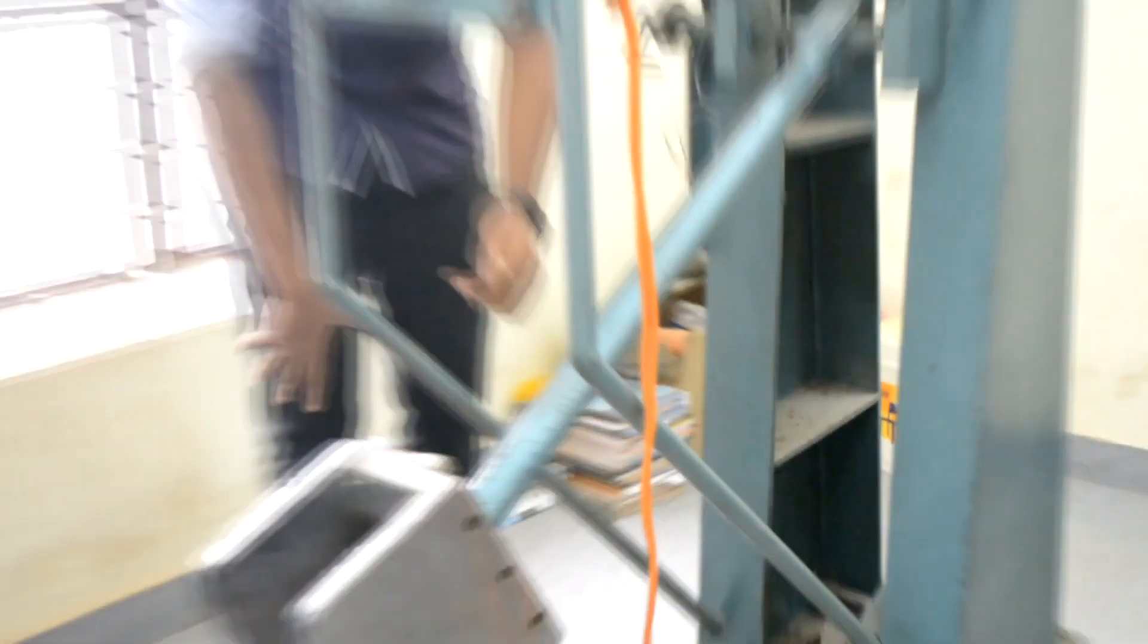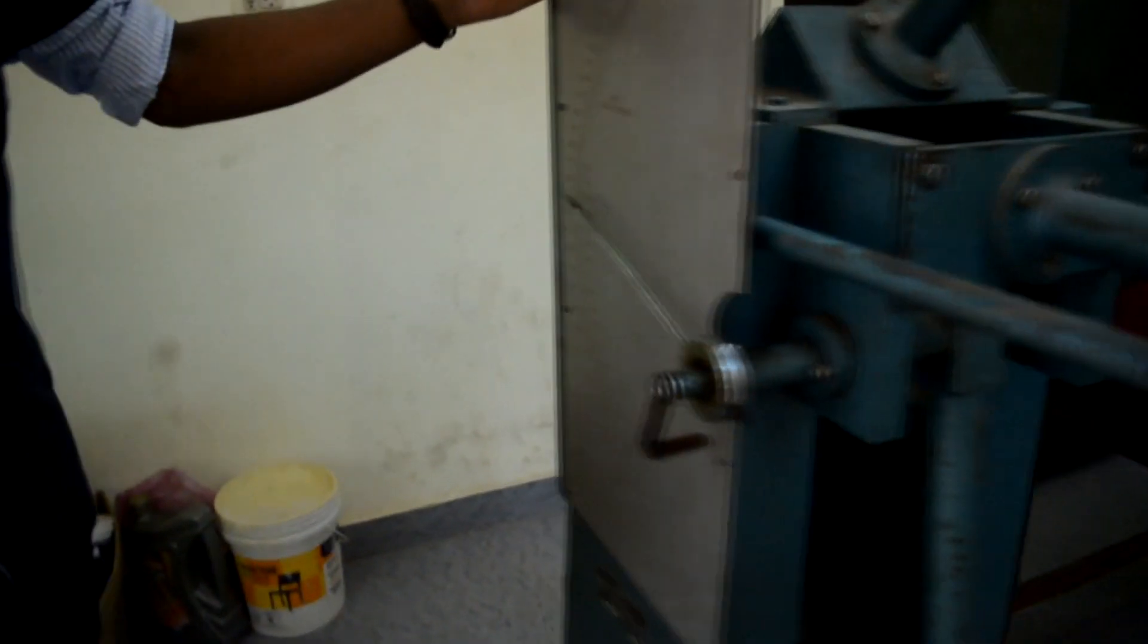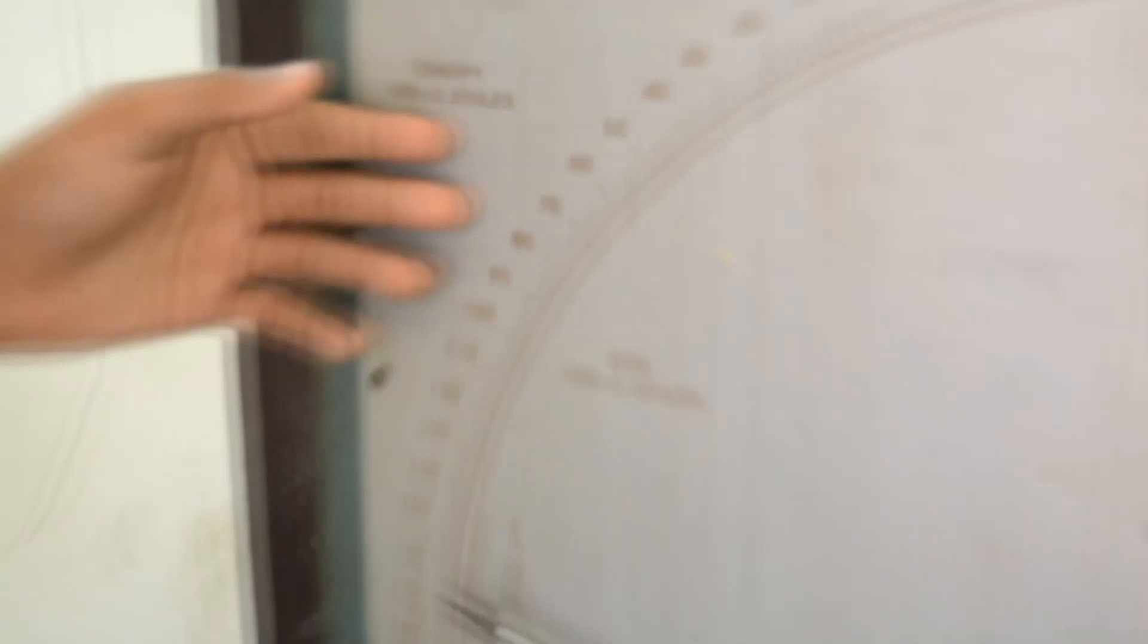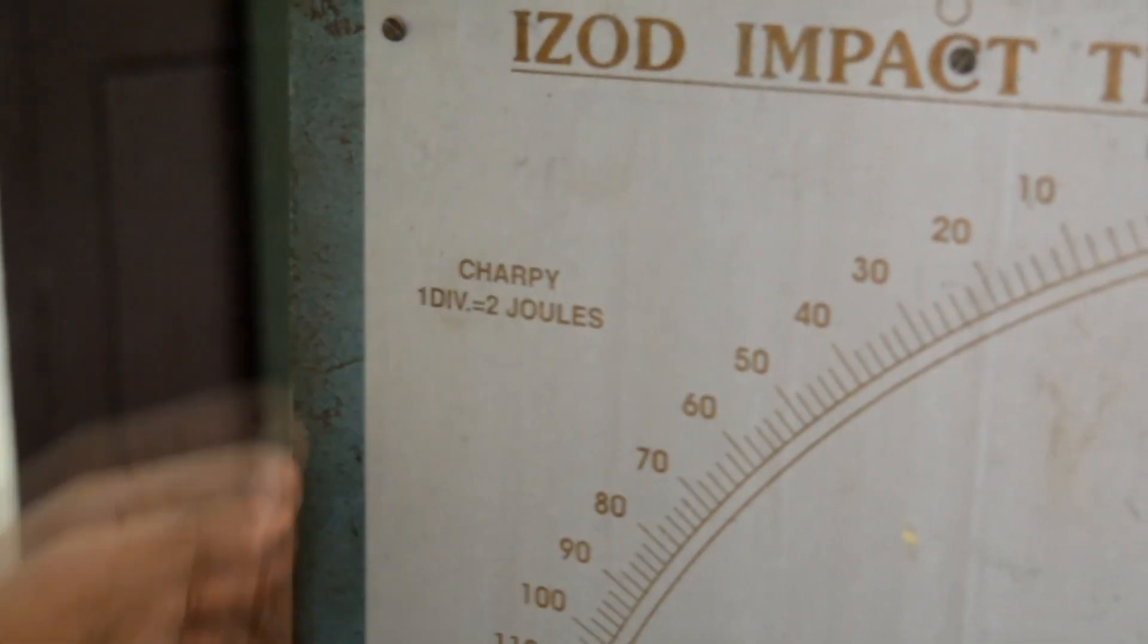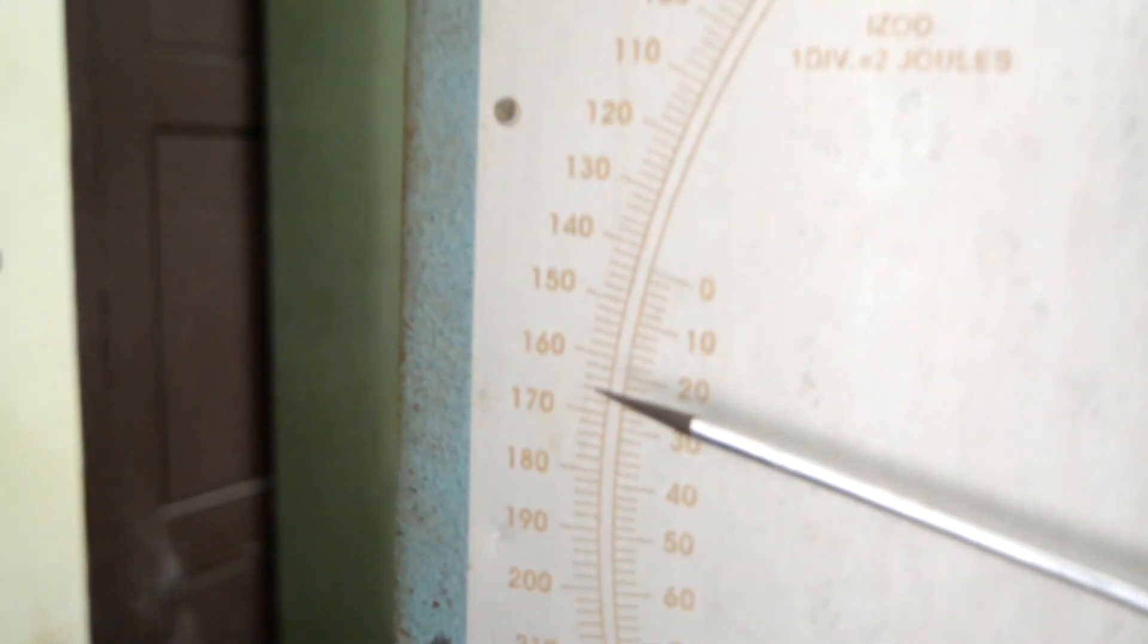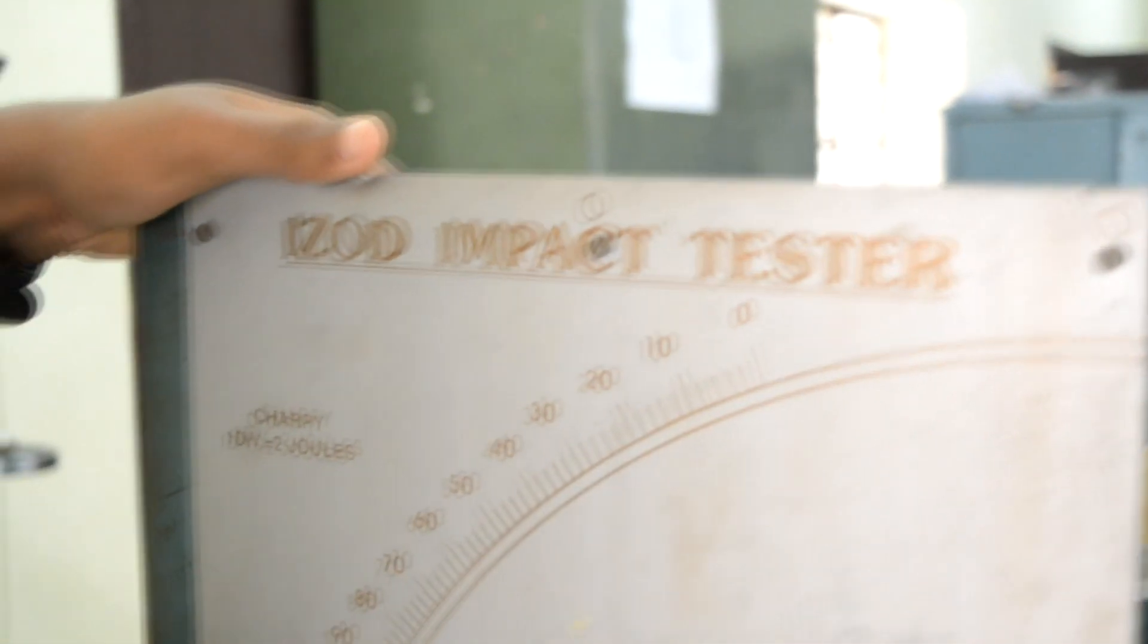Now, the pendulum has struck the specimen. After the pendulum strikes the specimen, the corresponding impact value can be found from the dial. Here we can see that the impact value is 25 joules, and the value is taken from zero.